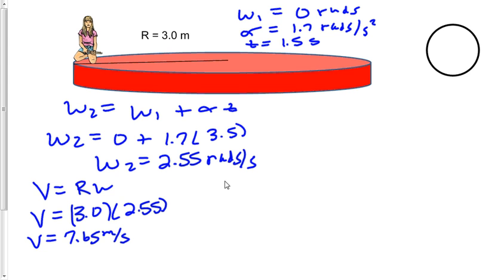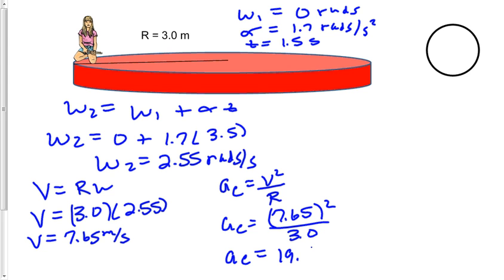Let's calculate the centripetal acceleration: ac equals v squared divided by r. So ac is equal to 7.65 squared divided by 3. So I'll record that over here: ac for this will be 19.5 meters per second squared.